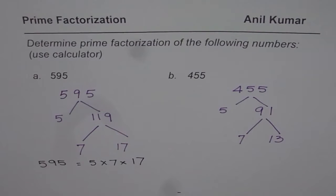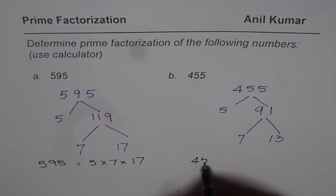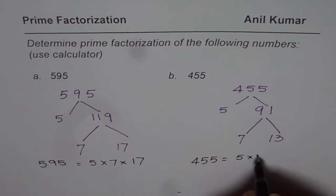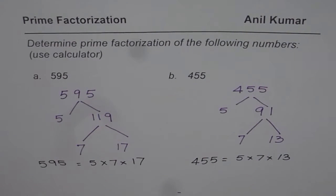It is very important to understand. We can write 455 as 5 times 7 times 13. That is how these numbers can have different prime factors. I hope now you understand that 91 is not a prime number. It has factors 7 and 13.